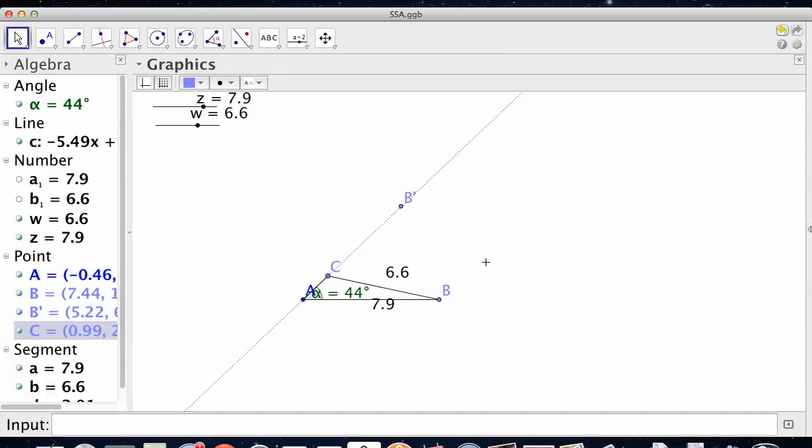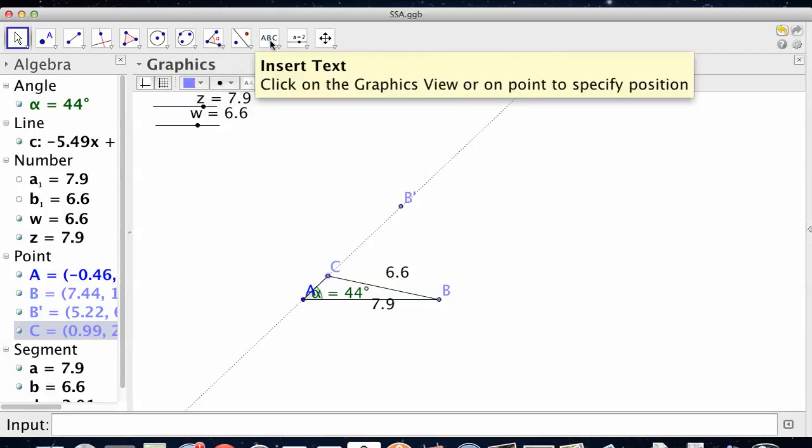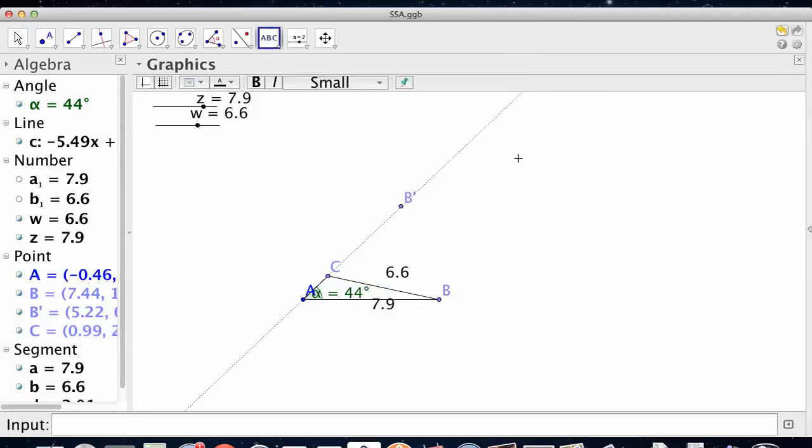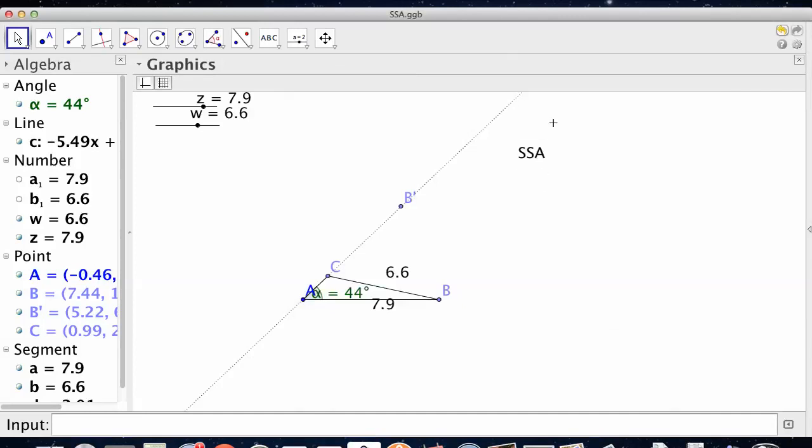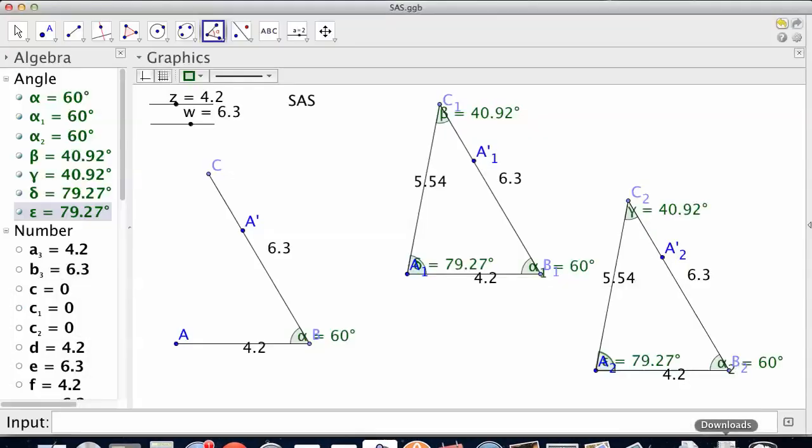Not because I can make an infinite number of triangles, like the angle-angle-angle, but because I can make more than one. Our goal here is to find the criteria that allows us to make one and only one triangle. So this SSA concept does not work, where SAS before did work. Remember that.